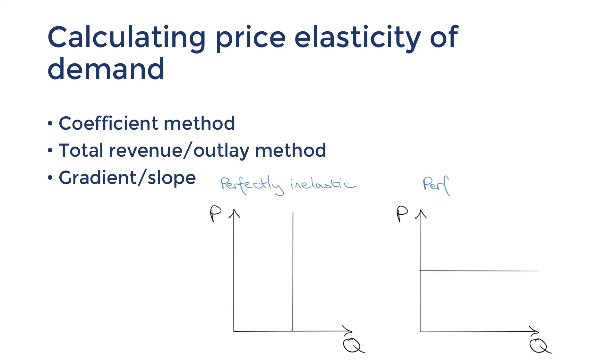The other extreme is when the slope is completely flat. This is perfectly price elastic demand and it means that consumers will only accept one price. A simple example would be fruit and vegetables because of how many substitutes are available.